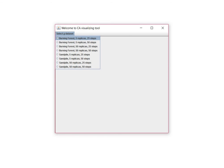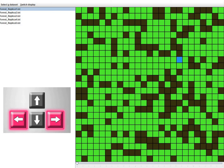To show you the simple visualization, we'll select, as example, a burning forest with five replicas and 25 steps. On the left, you see that there are five replicas. That is, the simulation was run five times, so it created five files. One, two, three, four, and five.